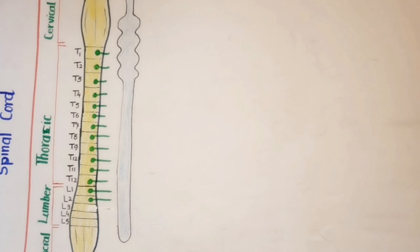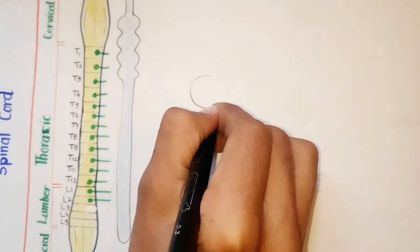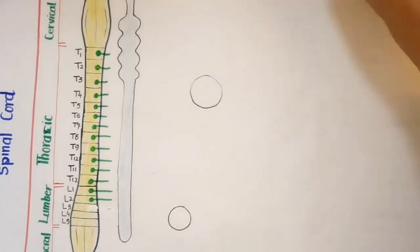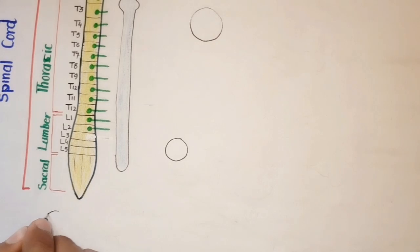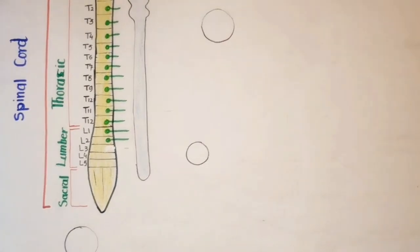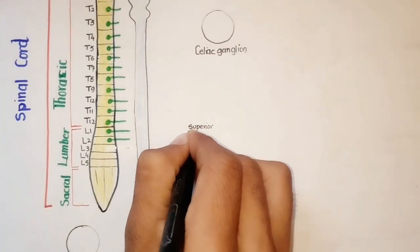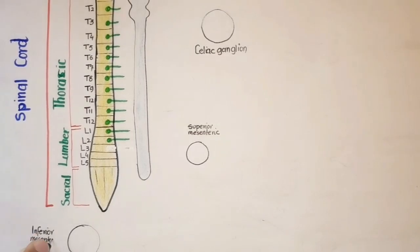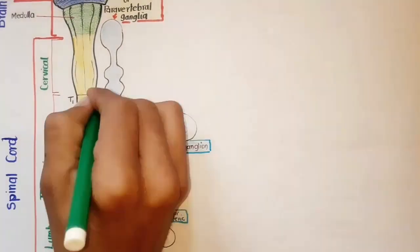Here I've drawn only one side of the paravertebral ganglia, but there are two paravertebral ganglia present on both sides of the spinal cord. Other ganglia of the sympathetic division are the prevertebral, or collateral ganglia. These are located outside of the sympathetic chain ganglia, far away from the spinal cord. Compared to the sympathetic chain ganglia, prevertebral ganglia are situated in the thorax, abdomen, and pelvis, and consist mainly of the celiac, superior mesenteric, and inferior mesenteric ganglia.